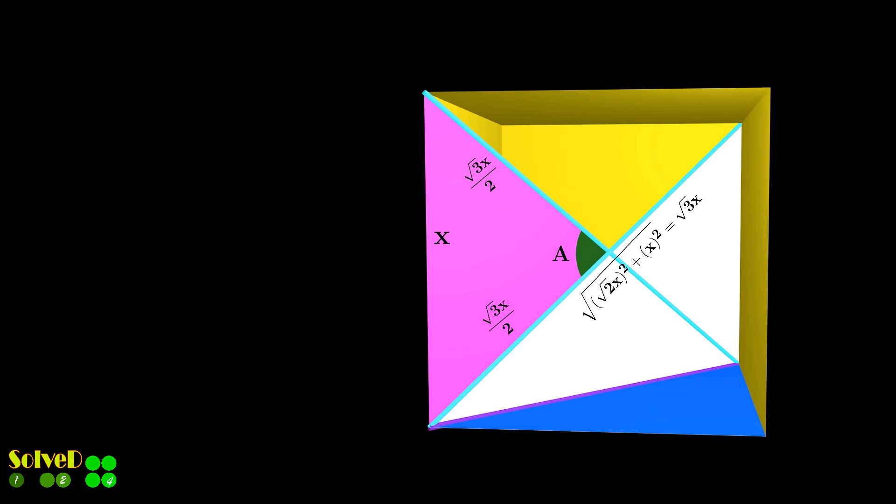Now that we have all three lengths, use the cosine rule for the angle, and simplify.